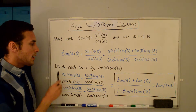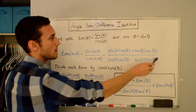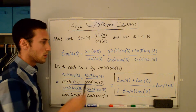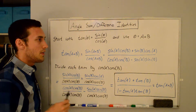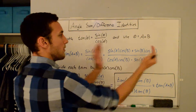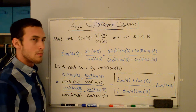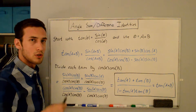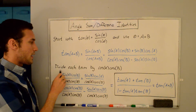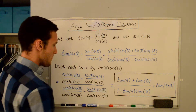What we're going to do now is divide each term by cosine a and cosine b. So every single term on the right-hand side we'll divide by cosine a times cosine b. This is the same as multiplying the right-hand side by cosine a cosine b over cosine a cosine b, which is just one. But I decided to write it as dividing each term because it makes more sense when you're looking at each term.